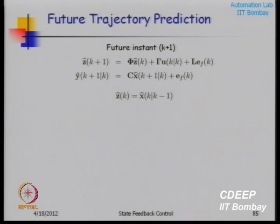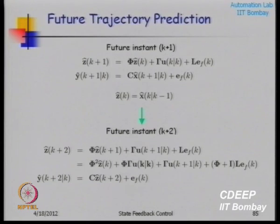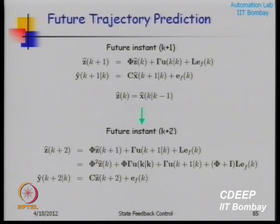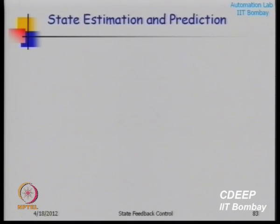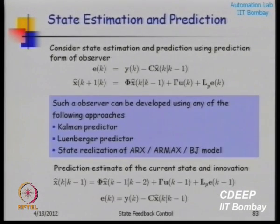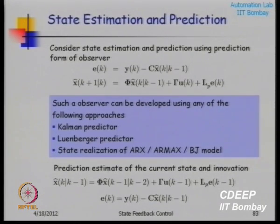I have recursively used the model. The key point is that the first point on the prediction is connected with the observer from the past — this is the connection between the future prediction and the past observer. The initial point for the prediction is the same as the last point of the observer. At time k, my observer gives the predicted estimate of x, which is x̂(k|k−1), and I start prediction from the current point.